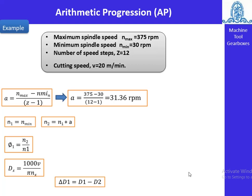Taking an example: maximum spindle speed is 375 rpm, minimum spindle speed is 30 rpm, number of speed steps z = 12, and cutting speed v = 20 m/min. Using a = (n_max − n_min) / (z − 1), and with known values, we calculate 'a'. φ is the ratio of two successive spindle speeds. We also calculate dx and delta_d for each step.